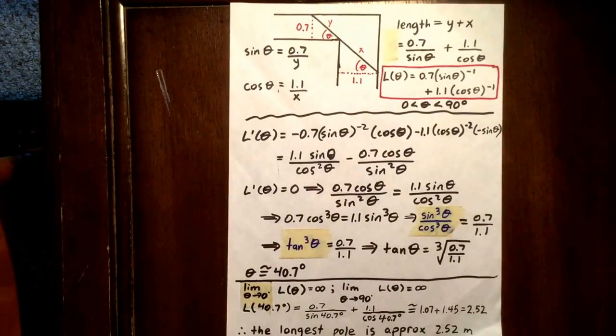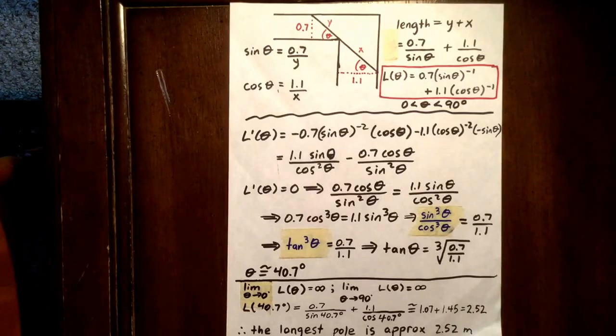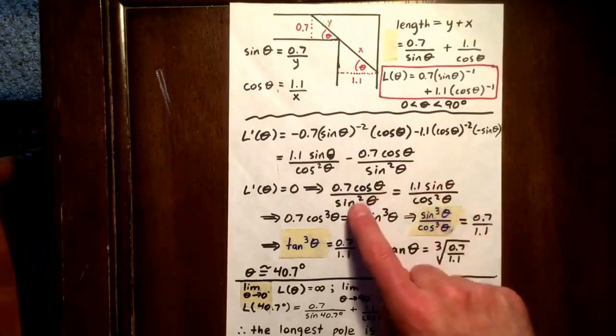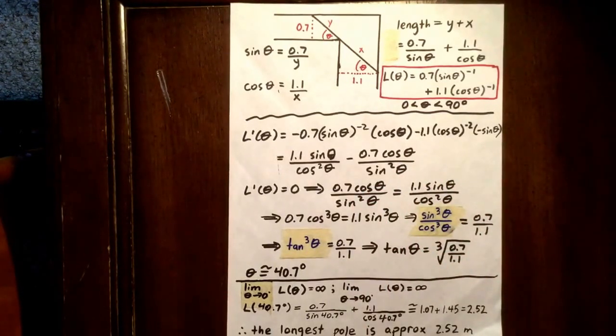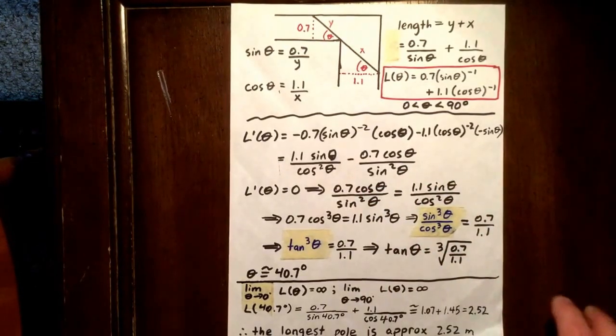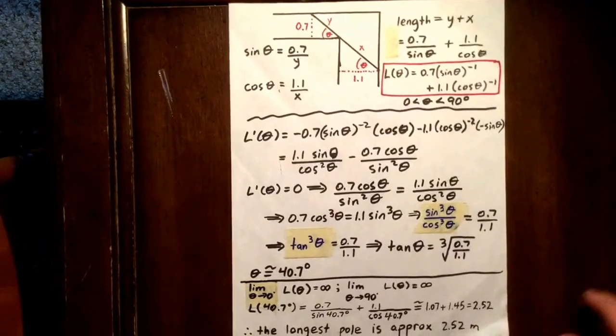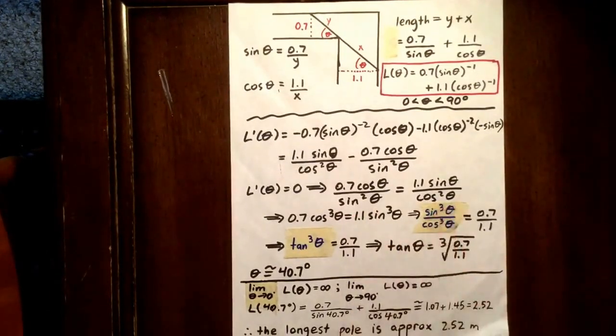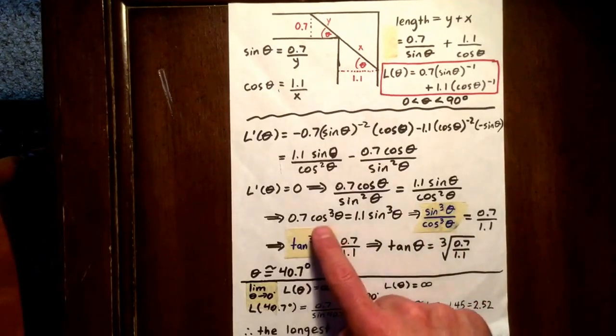What we do now is we let the derivative equal 0. So we can add this to both sides. And this is what we get: 0.7 cos theta over sine squared theta equaling 1.1 sine theta over cos squared theta. Now we can multiply both sides by sine squared theta and cos squared theta. And we get this expression.